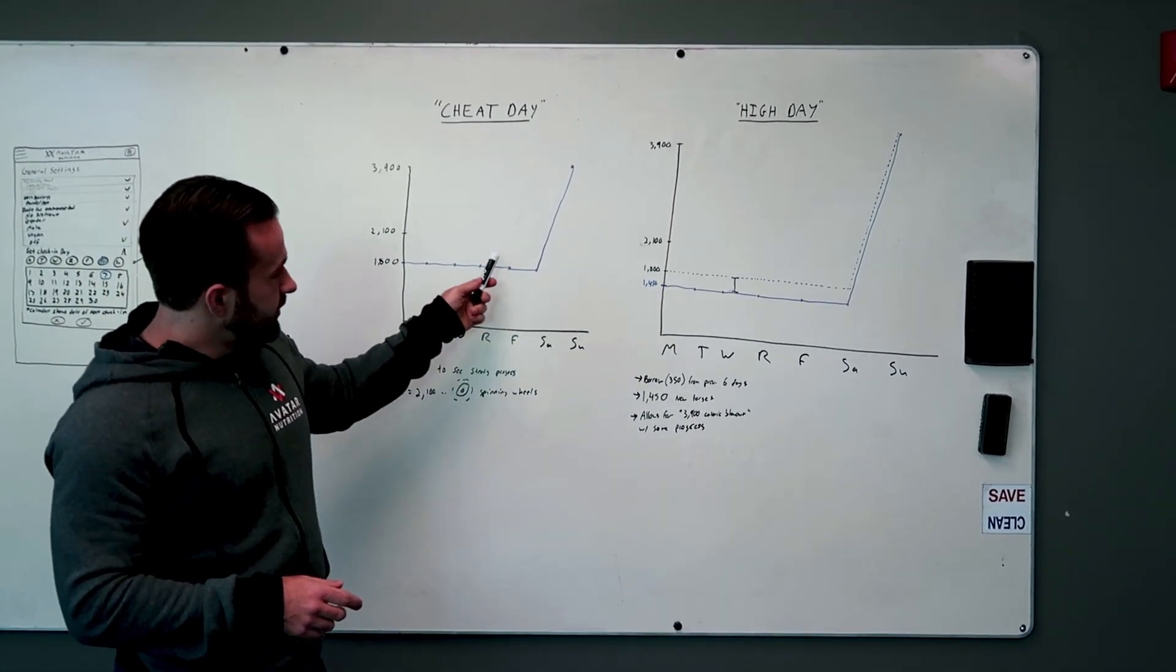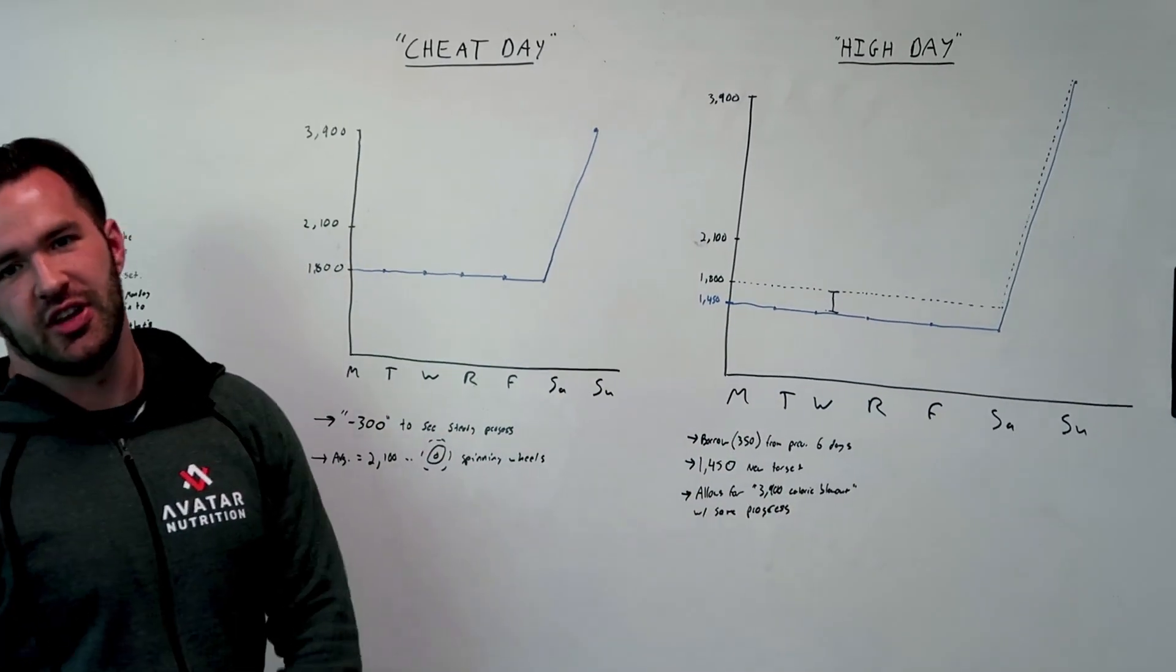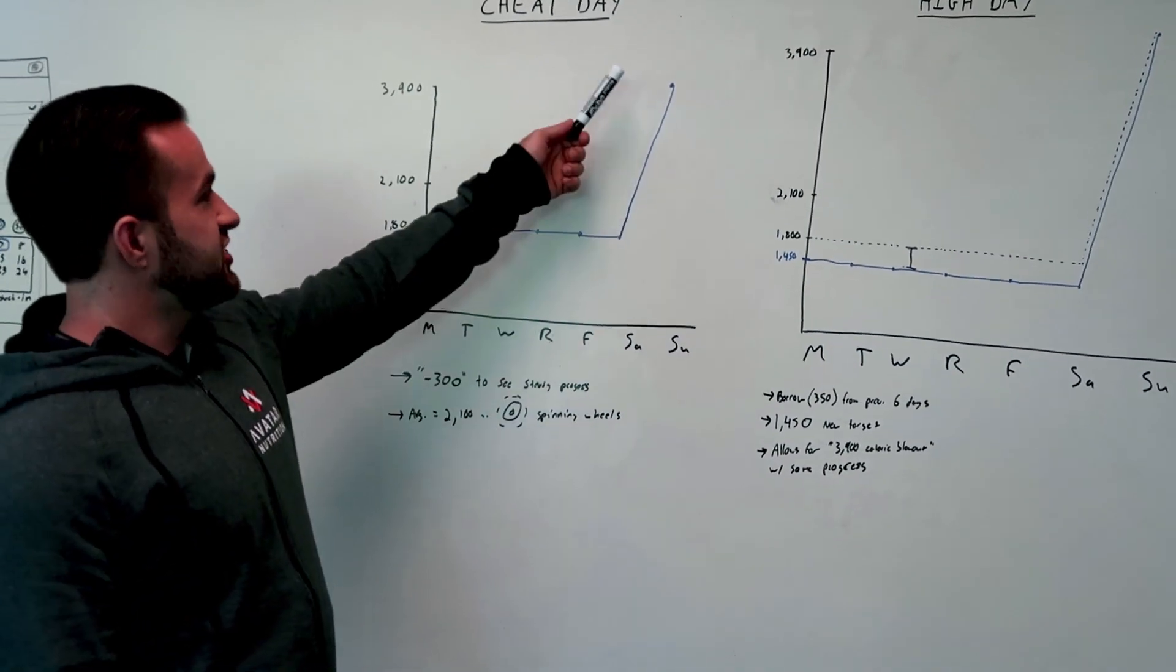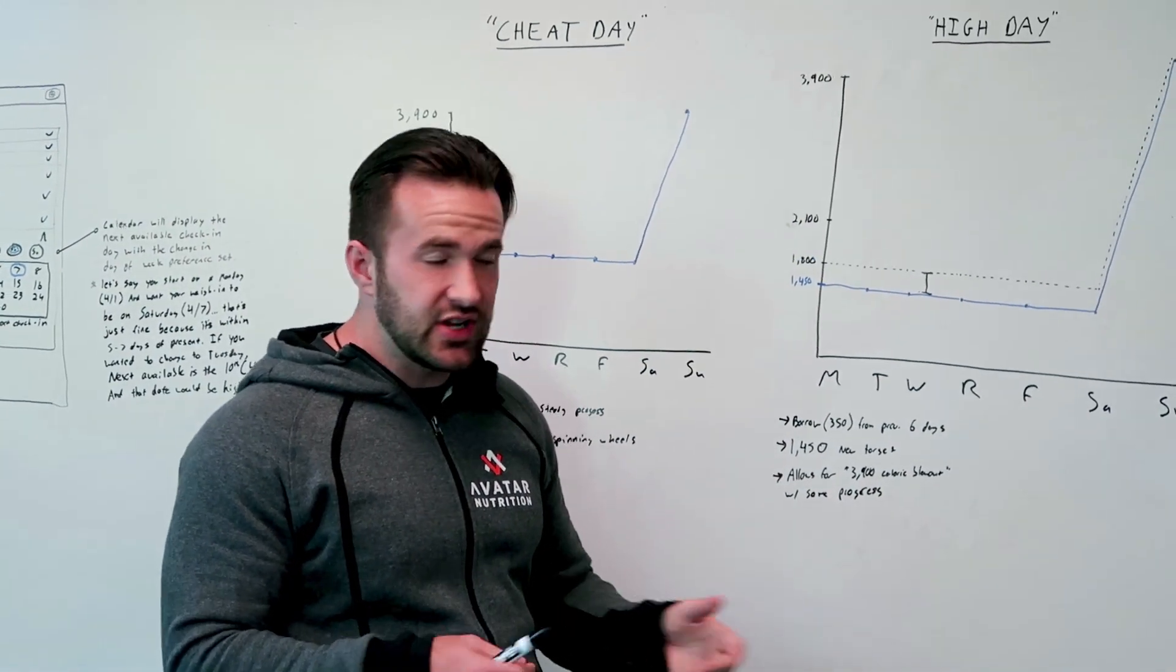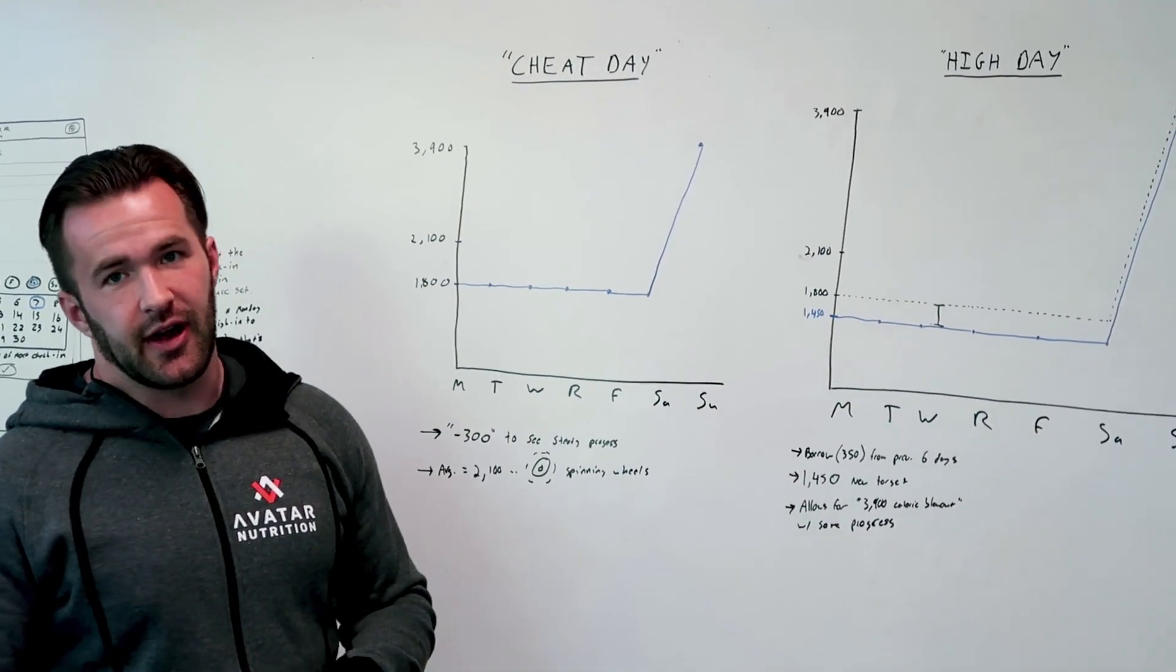So they're plugging along, plugging along, plugging along, doing great, and then boom, cheat day happens. So what happens as a result of this? Let's say that we go back and tally up everything they ate on that cheat day, and it winds up being 3,900 calories.